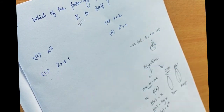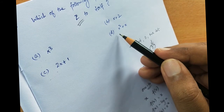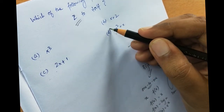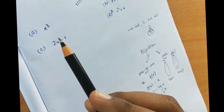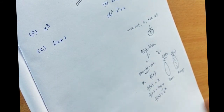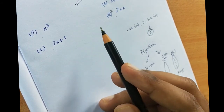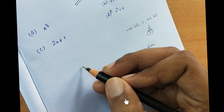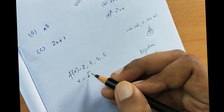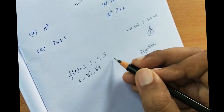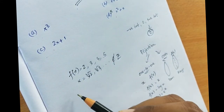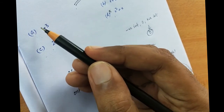x²+x can never be one-to-one because a negative and a positive number can produce the same squared value, making it many-to-one, so option 4 is eliminated. x³ is one-to-one since negative cubed gives negative and positive cubed gives positive, but it is not onto from Z to Z: for example, f(x) = 2 would require x = ∛2, which does not belong to Z. So x³ is also eliminated.